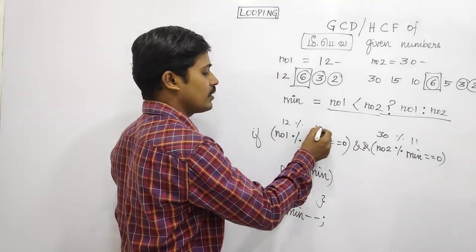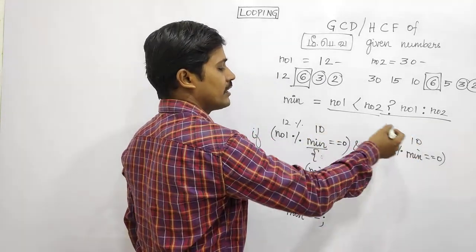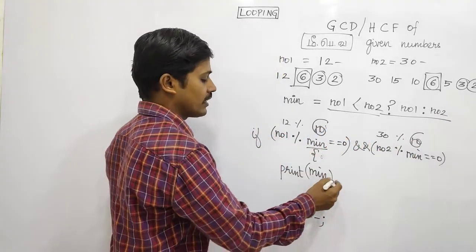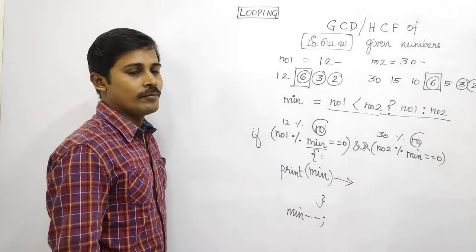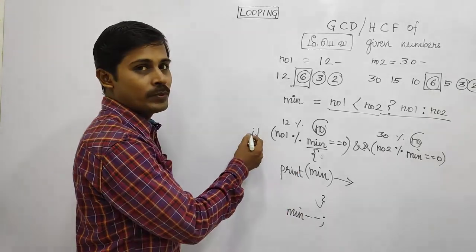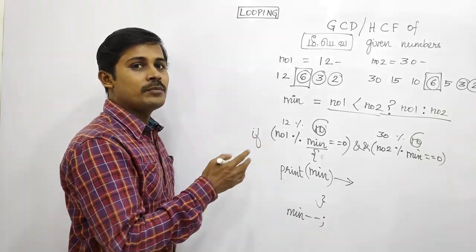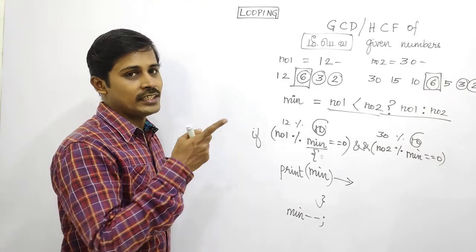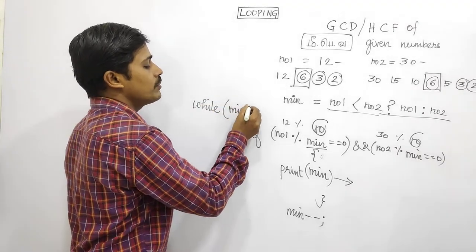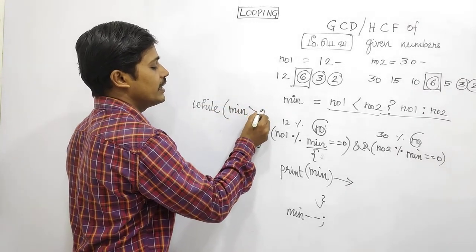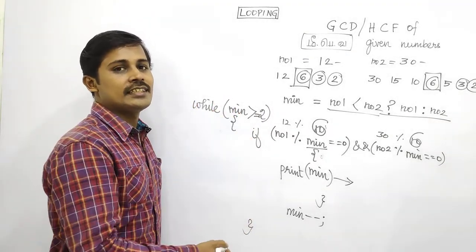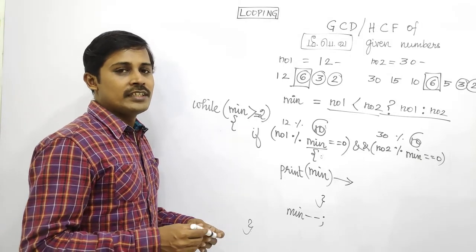We count down: 10, 9, 8 — at 6, both numbers divide evenly, so 6 is the greatest common divisor. That is the greatest common divisor of the two given numbers. We exit the loop and output the result.